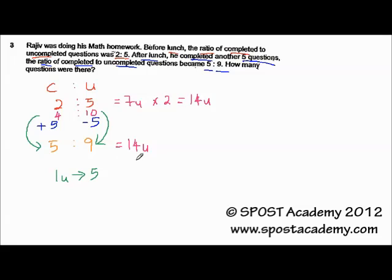So, the total number of units is 14 units. Because we have made them the same, so it's easier for us to compare. So, 14 units would be 14 times 5. And that gives us 70.